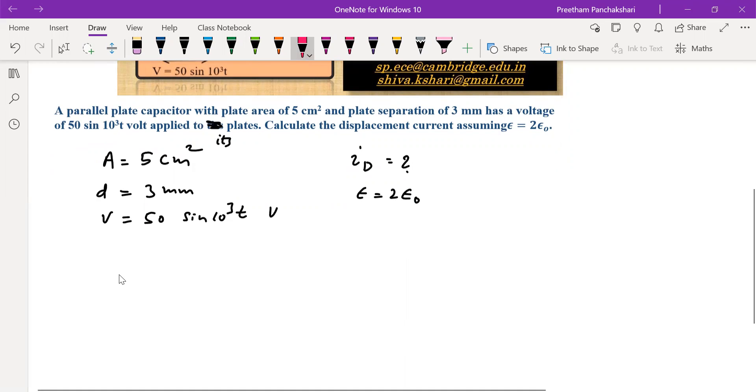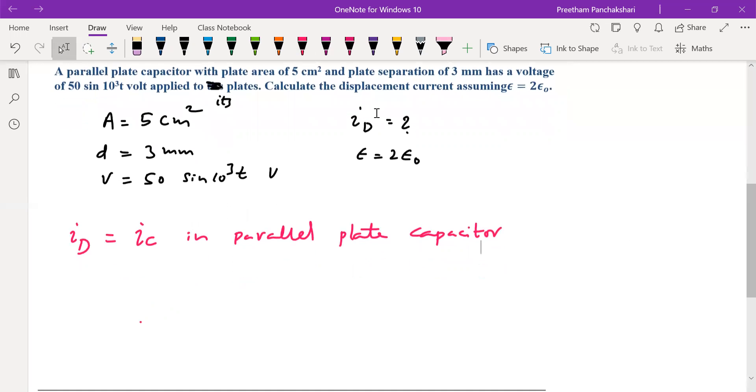We have two equations to find displacement current. We know that the displacement current is equal to conduction current in a parallel plate capacitor. This is already proved in the previous video. So now we can find either displacement current or conduction current. Both will yield the same results. Whichever is comfortable can be handled here.